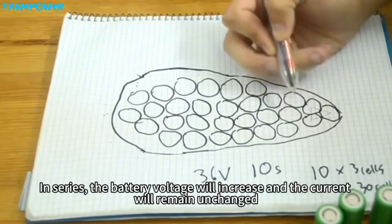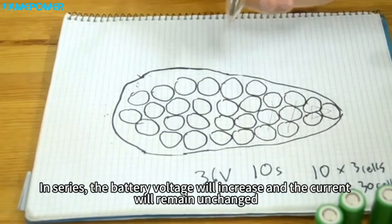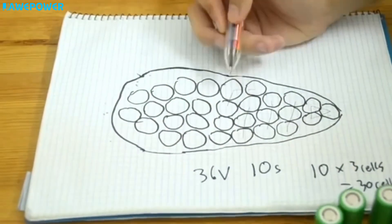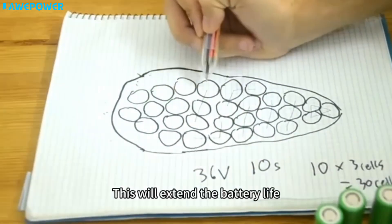In series, the battery voltage will increase and the current will remain unchanged. This will extend the battery life.